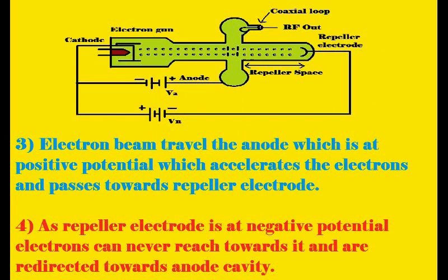From the schematic, the anode part — that is, the cavity — is connected to the positive terminal of the source, so a positive voltage is induced in the cavity. The electron beam travels from cathode towards the anode, and due to the positive potential, it accelerates the electrons, which then pass towards the repeller electrode. The repeller electrode is connected to the negative terminal of the battery source.